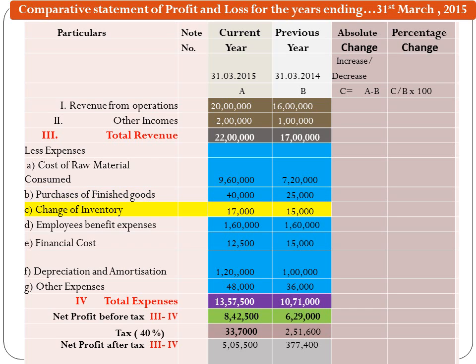The third head of expenditure is Change of Inventory. Change of Inventory is the difference between Opening Stock of Finished Goods and Closing Stock of Finished Goods, that is Opening Stock minus Closing Stock. If it is a positive amount, it will be added in the Expense, and if it is negative, it will be shown in brackets to reflect subtraction.